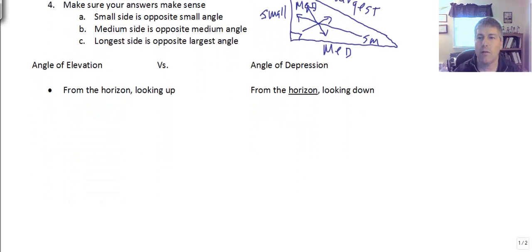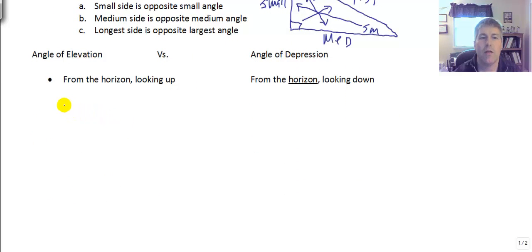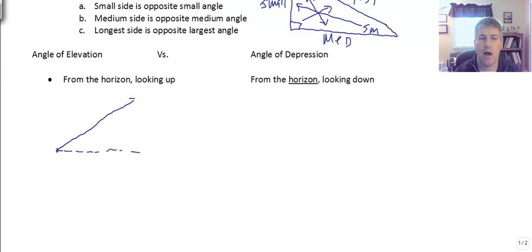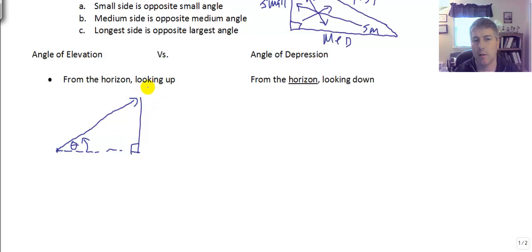Let's review the angle of elevation. The angle of elevation is measured from looking straight ahead — your horizon — to looking up. So if you're standing on the ground looking straight ahead and then looking up toward a building, the sun, or the top of a tree, the angle formed between your horizon and that upward line of sight is your angle of elevation.